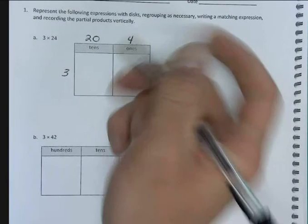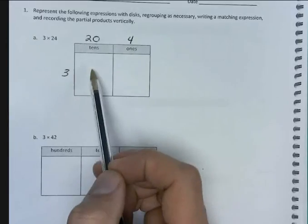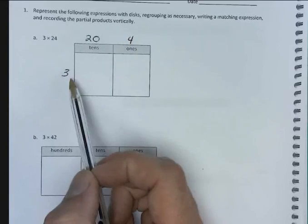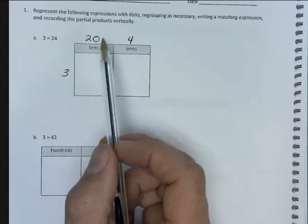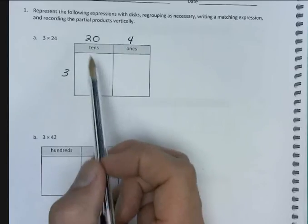Now we take our 3 and put it alongside. Why we call this the area model is if we imagine these as two rectangles, the rectangle length across the top would be 24, this side would be 3. To find the area you multiply the two sides and that equals the interior of the rectangle. That's what we're doing with our multiplication here.